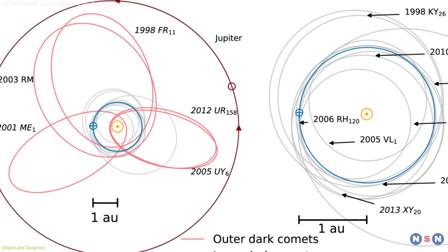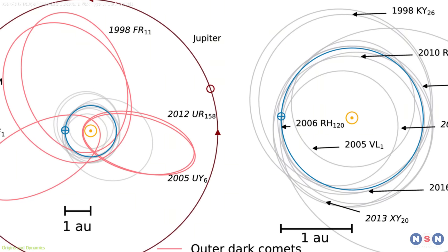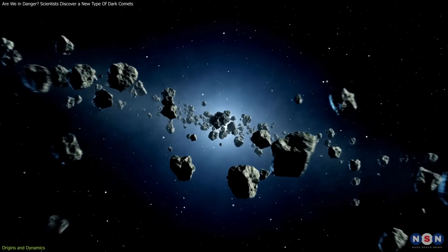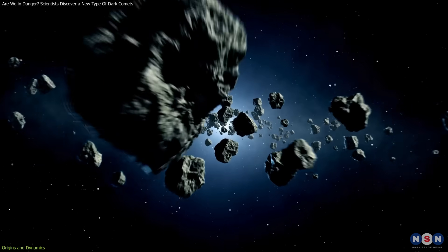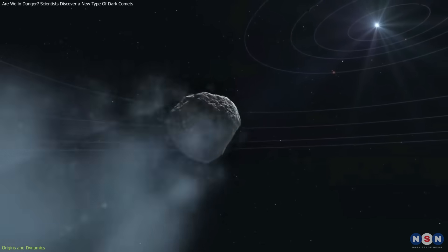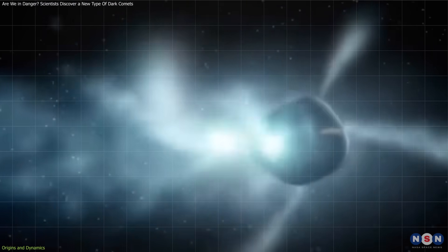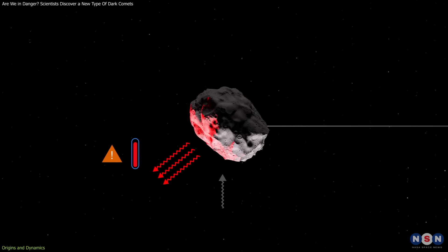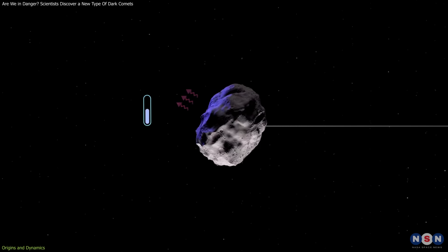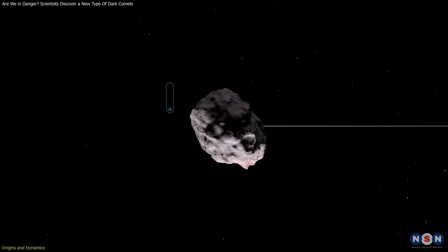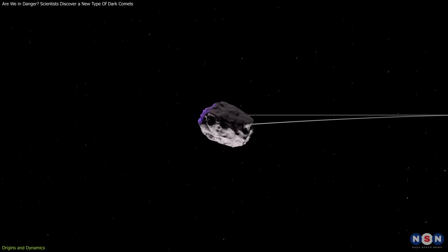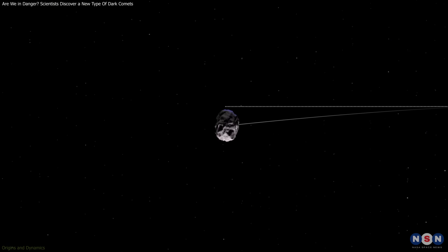The orbits of dark comets often display subtle deviations from predictions based on gravity alone. These deviations suggest the presence of additional forces, such as outgassing or rotational shedding of material. For example, the Yarkovsky effect, where sunlight heats one side of an object causing it to emit radiation unevenly, might play a role. However, the exact mechanisms remain a topic of active research.